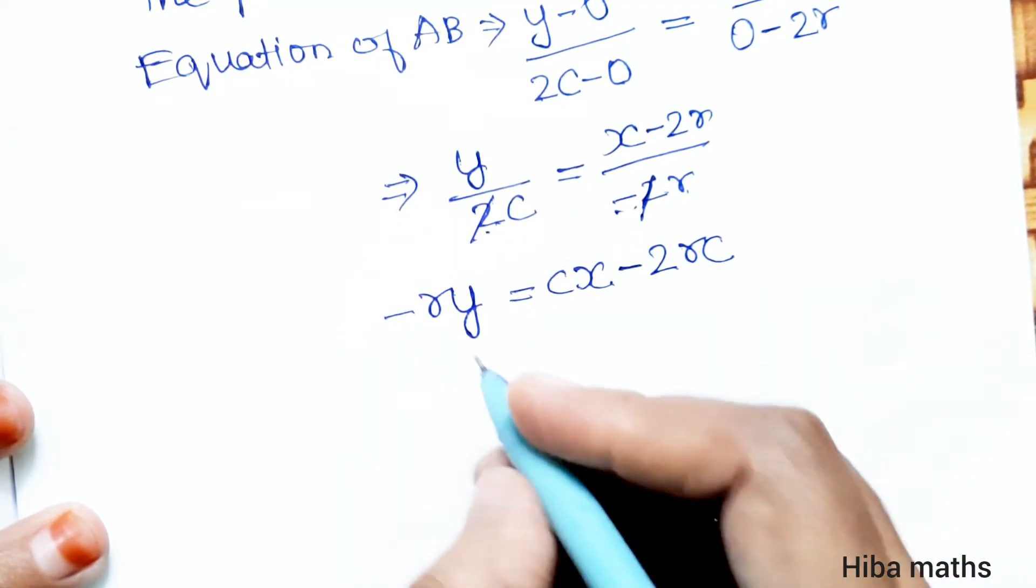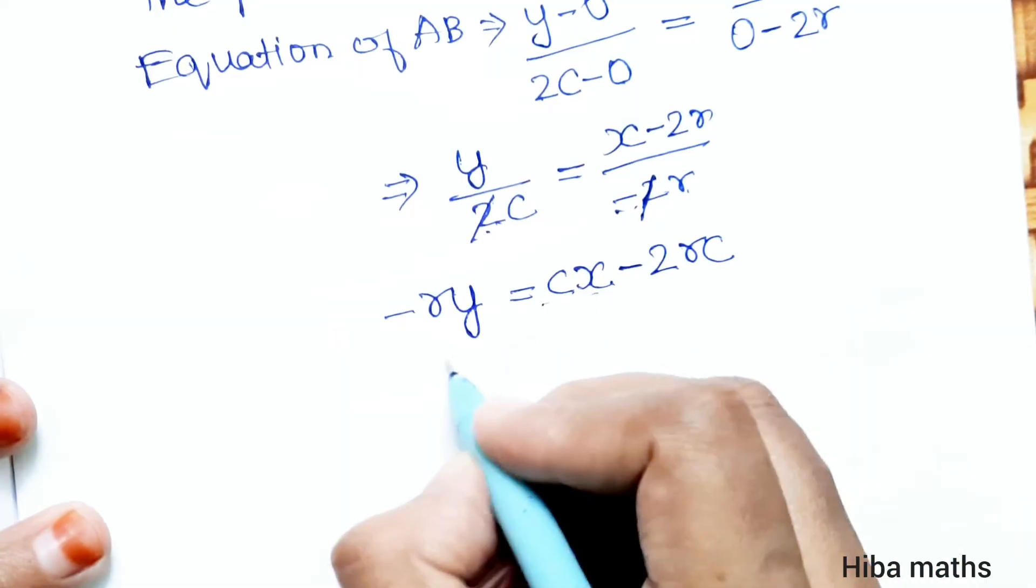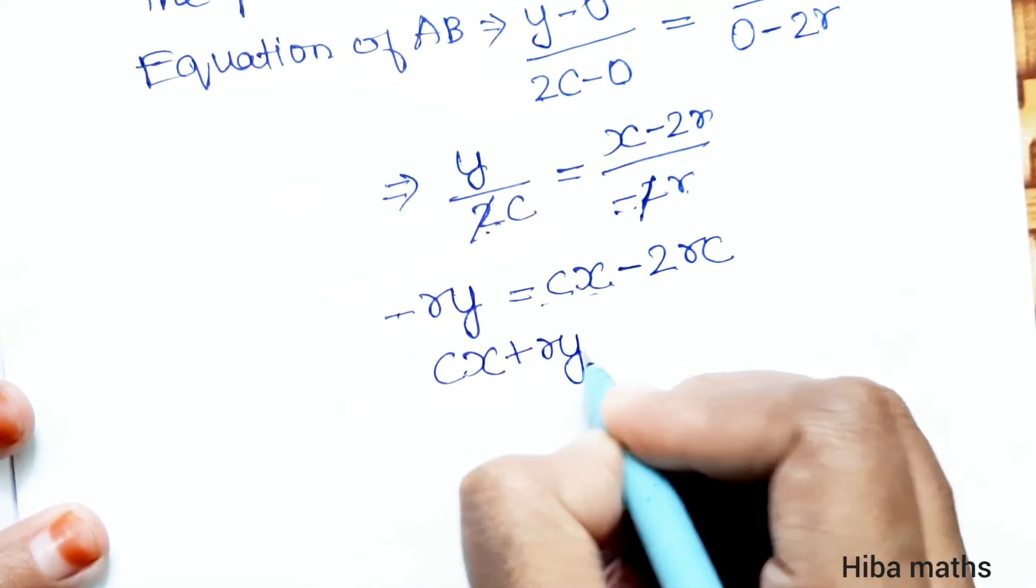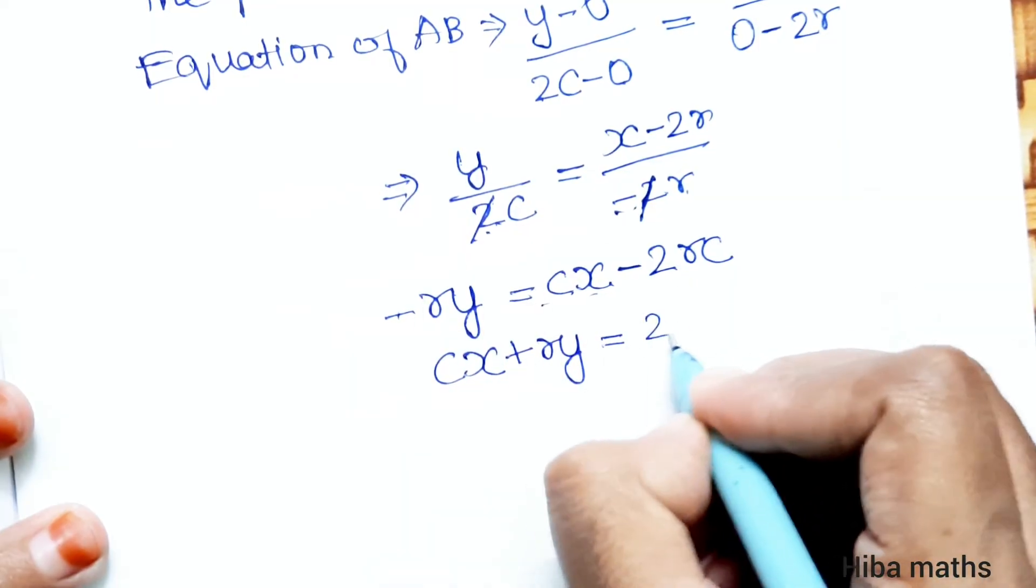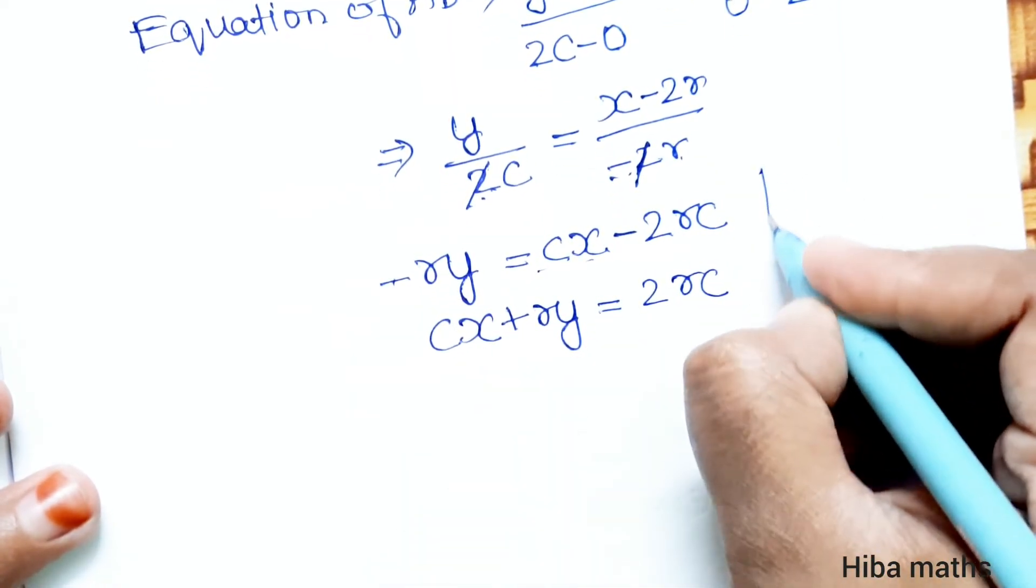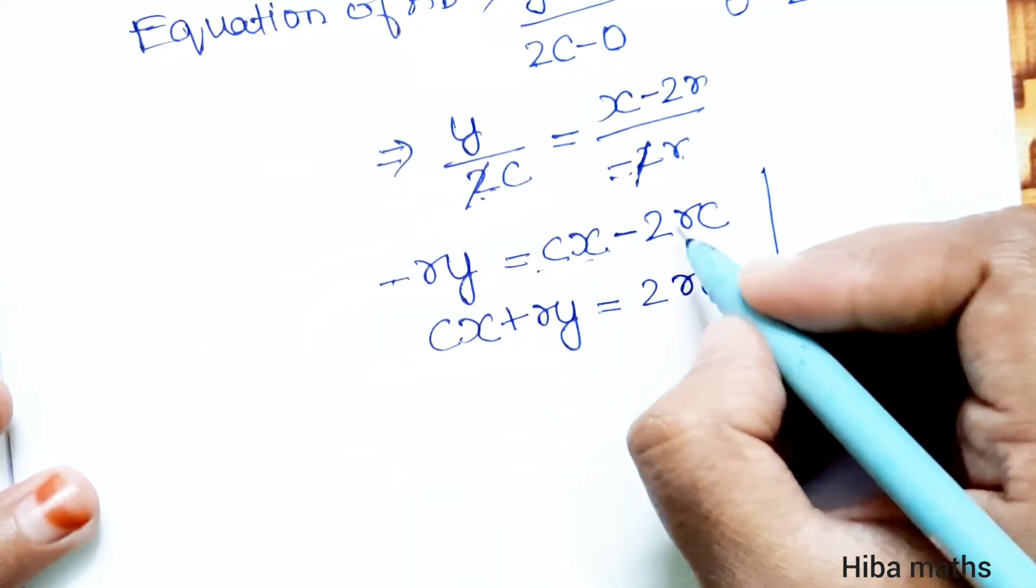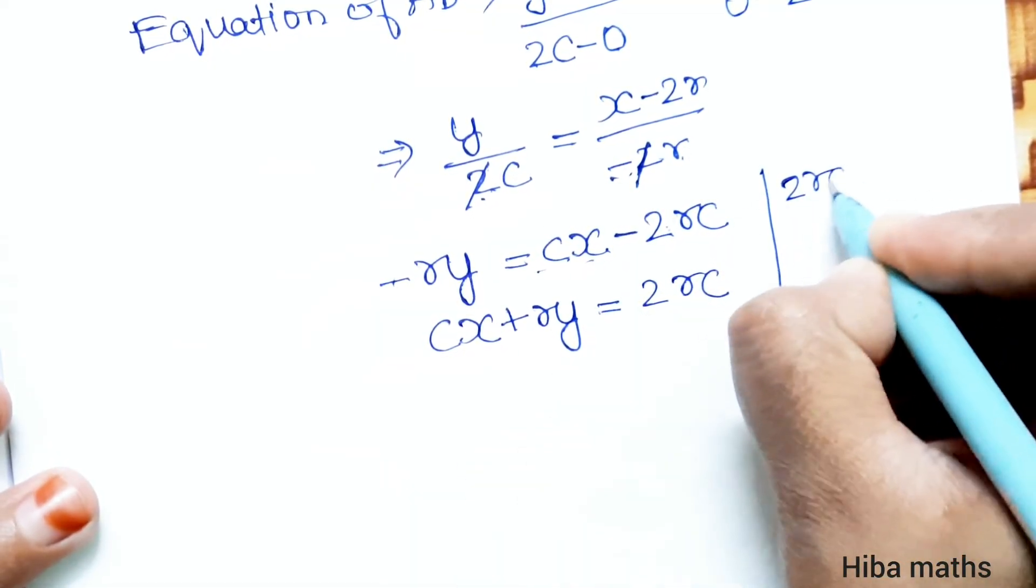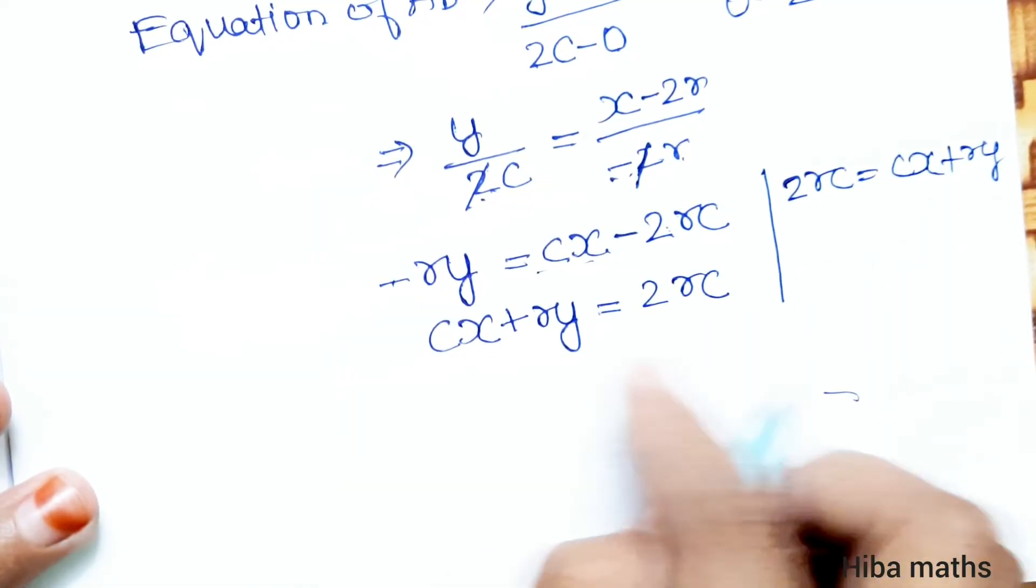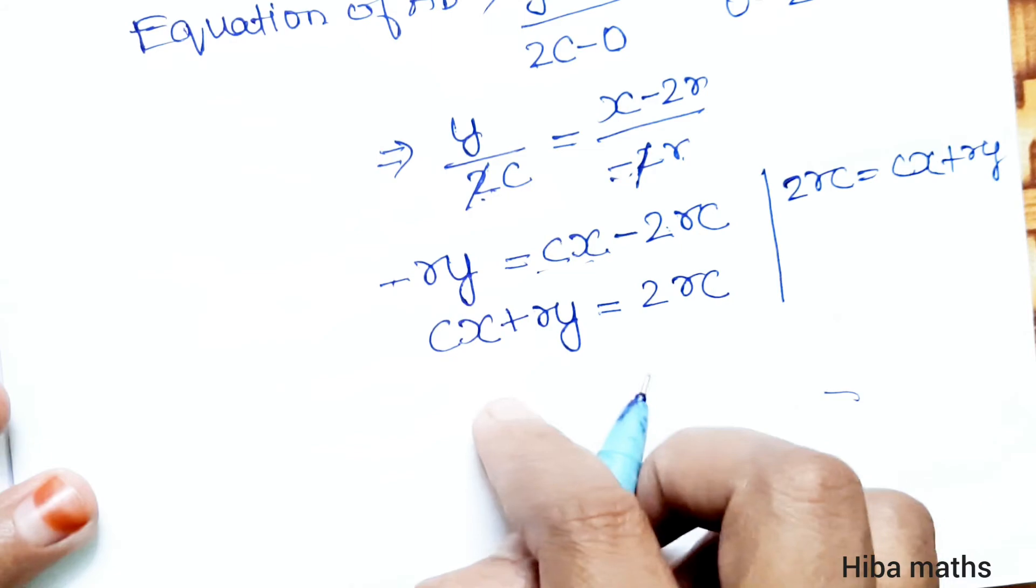So minus ry goes to the other side, giving cx plus ry equals 2rc. We need x and y on one side and a number on the other side.